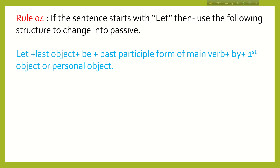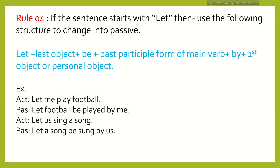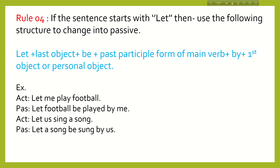Rule 4: If an imperative sentence starts with 'let', you have to use the following structure: Let + last object + be + past participle form of verb + by + personal object. Such sentences have two objects. For example, 'Let me play football.' becomes 'Let football be played by me.' Another example: 'Let us sing a song.' becomes 'Let a song be sung by us.'